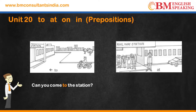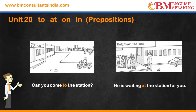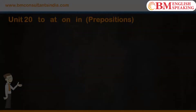He is waiting at the station for you. Wahan aapke liye station par ruka hua hai. 'To' matlab ki taraf — toward. 'At' matlab wahan par — at that place/point.